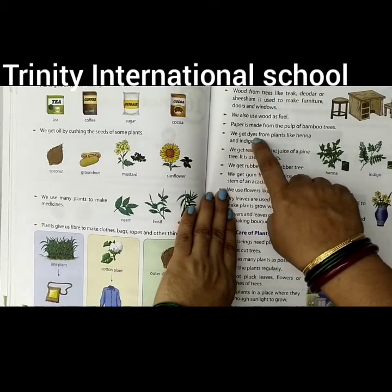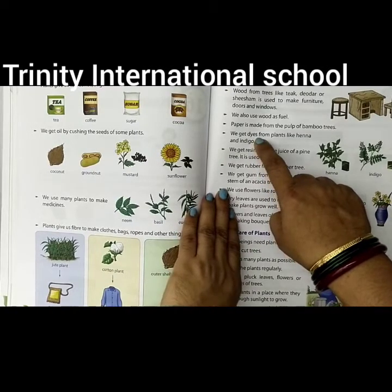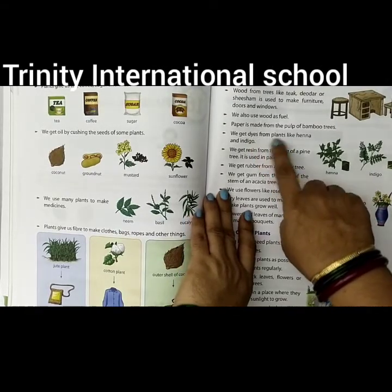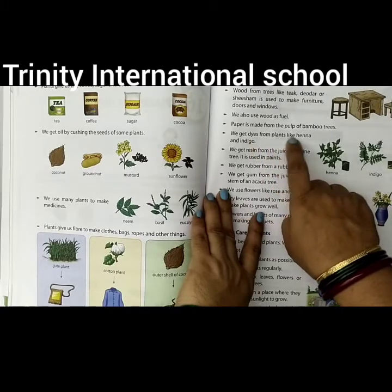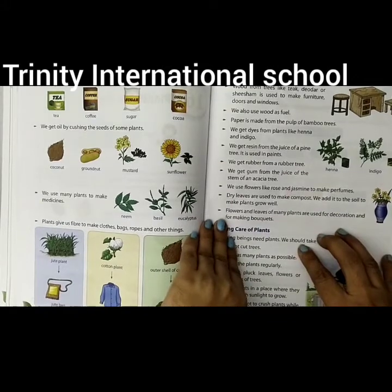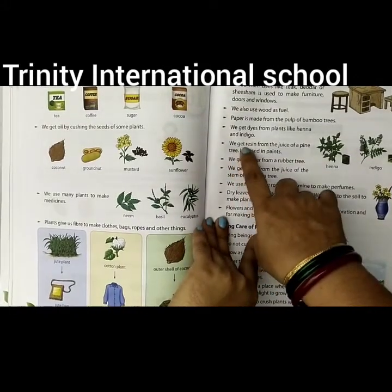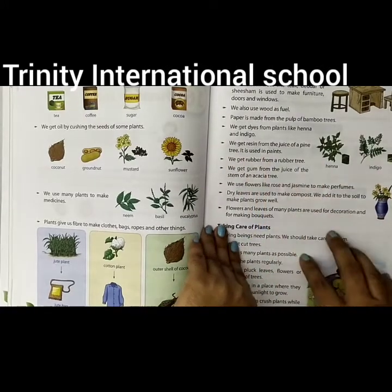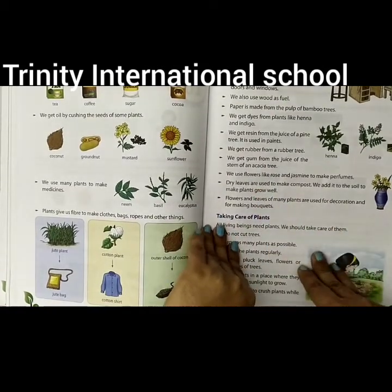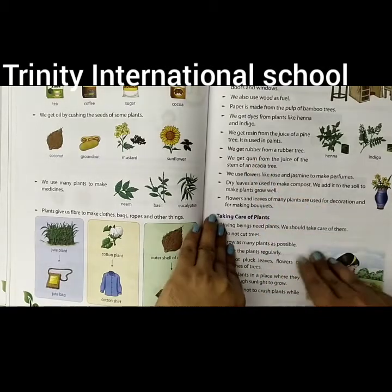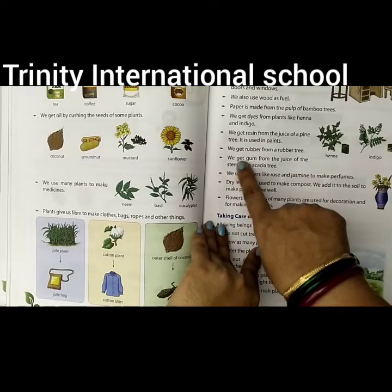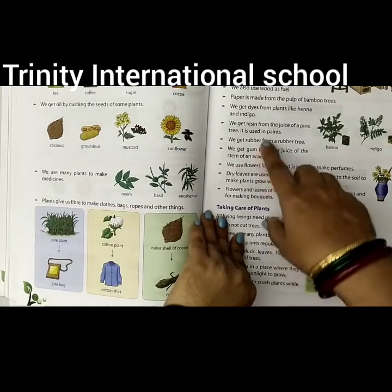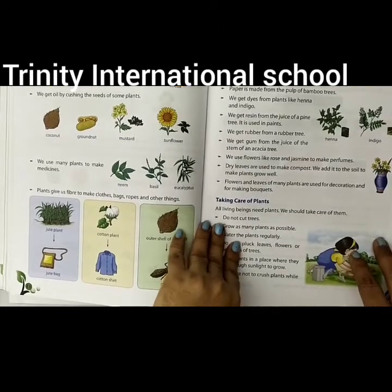We also get dyes — dyes means color. That dye color we get from indigo and henna type of plants. We also get resin from the juice of pine tree; resin is a thing which is used in paints. We get rubber also from the rubber tree, and we use rubber for making a variety of rubber items. We get gum from the juice of the stem of the acacia plant. So we get rubber, gum, dye, and resin — everything from plants.